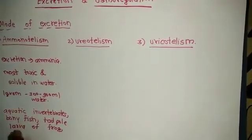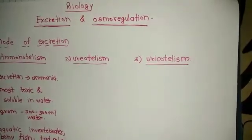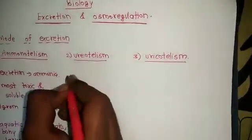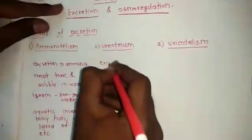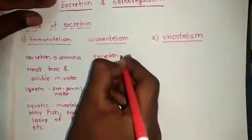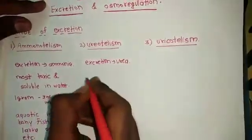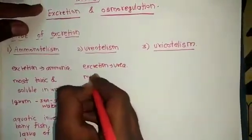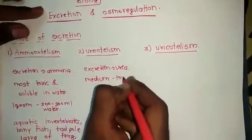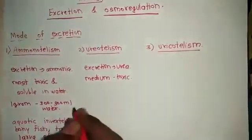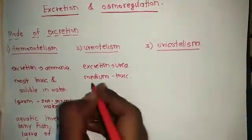Ureotelism means excretion in the form of urea. Urea is medium toxic, and 1 gram of urea is eliminated by 50 ml of water.